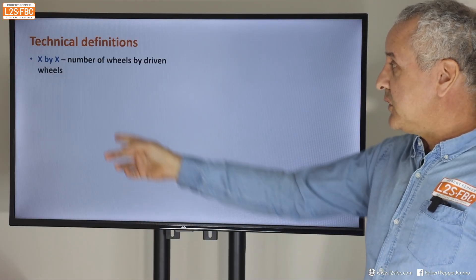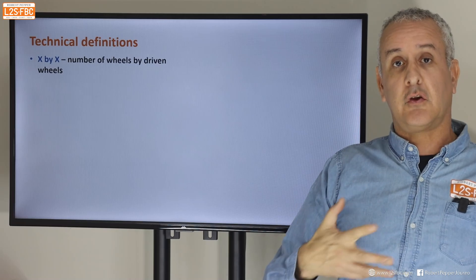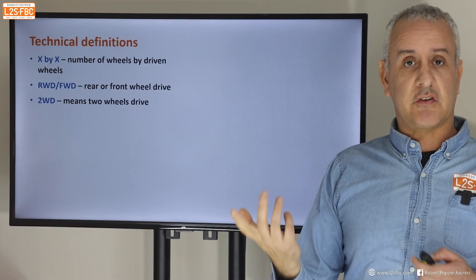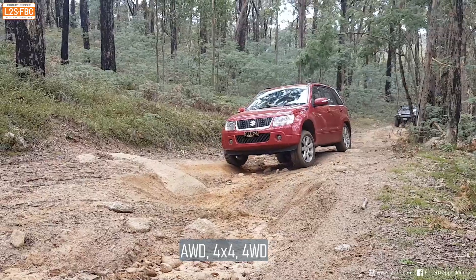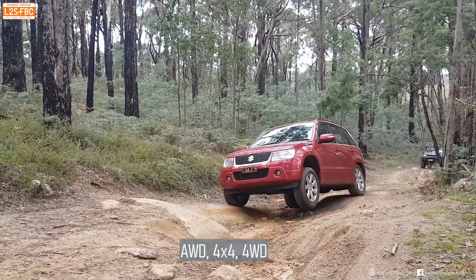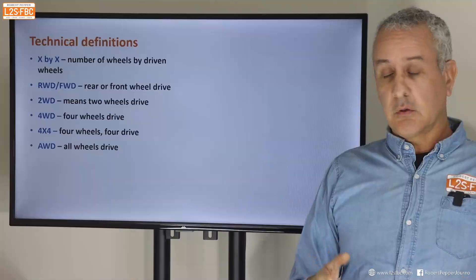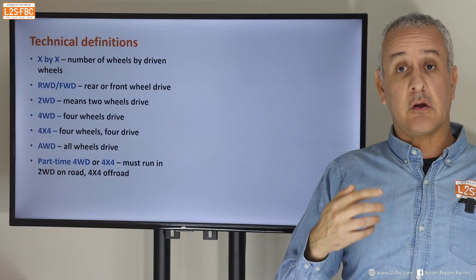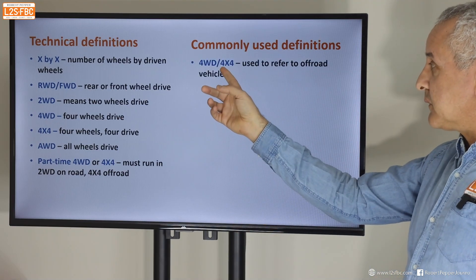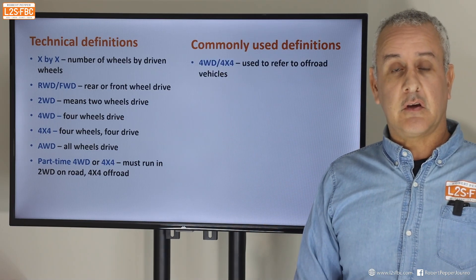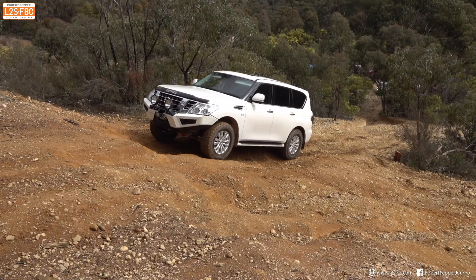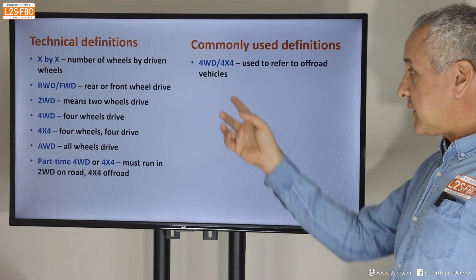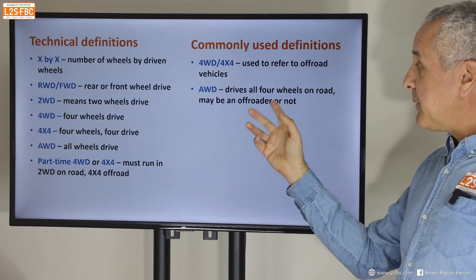To finish with technical definitions: x-by-x means number of wheels, number driven — so four-by-two is four wheels, two driven. RWD is rear-wheel drive, FWD is front-wheel drive. 2WD just means two wheels driving regardless of position. Four-wheel drive means four wheels driving regardless of total wheel count. Four-by-four is four wheels, four driven. AWD means all wheels driven. Part-time four-by-four runs two-wheel drive on road and four-wheel drive off-road on lower-traction surfaces.